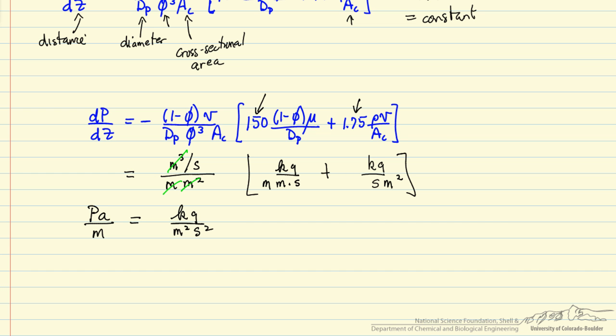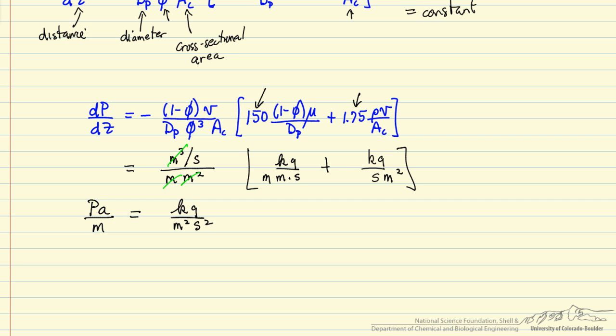And the question is: is this a consistent set of units? Well a pascal we can write as a kilogram per meter per second squared, and then we have the units meter for the distance down the reactor.